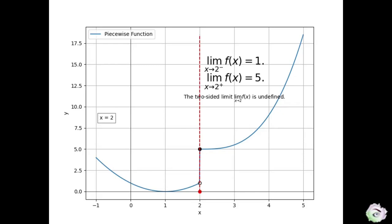Therefore, the function value f at x equals 2 is 5. Note that in this case, the function value is defined, but the two-sided limit is not.